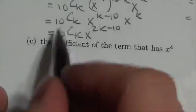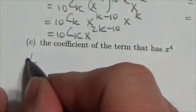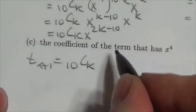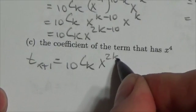Now in the first question here, and you can see it right here, I got that my general form was 10 choose k times x to the 2k minus 10.